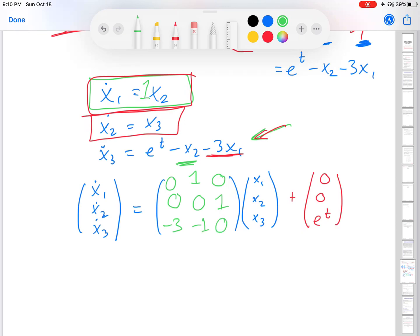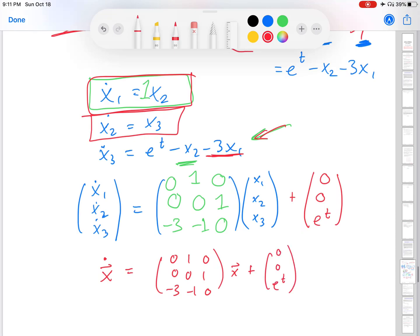Okay, so this is the matrix form of this system. If I put it in a more compact form, I would say vector x dot equals this particular matrix times vector x plus this vector, right? Where vector x equals x1, x2, x3.